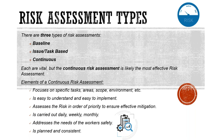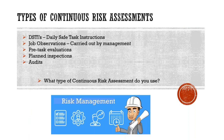Take a look at the different types of continuous risk assessments you should have in your safety file. If you don't have them, we have templates available free of charge. If you need training, we can arrange it, and through IOPSA you get discounts on training. With the basic description we provide by email, you should be able to perform them. These include daily safe task instructions, job observations, pre-task evaluations, planned inspections, and audits.